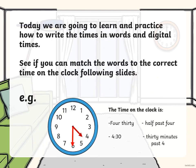Today we are going to learn and practice how to write the times in words and digital times. See if you can match the words to the correct times on the clock. We know that this is 4:30 — the time on the clock in words is half past four, in digital time it's 4:30, and also 30 minutes past four. These are all the ways that we can write our answers in words and numbers.